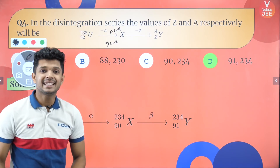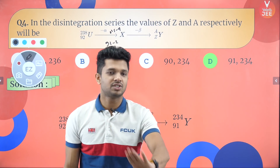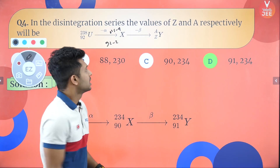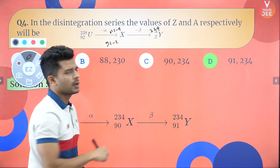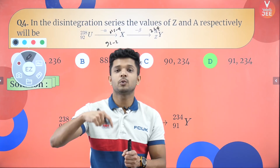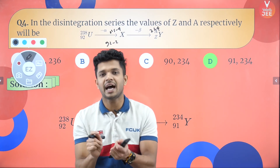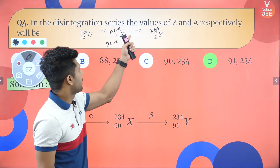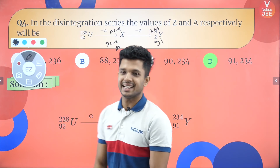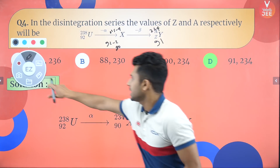Now from element X, beta-minus decay occurs. In beta-minus decay, the mass number never changes, so Y has mass number 234. For atomic number: in beta-minus decay, the atomic number increases by one (in beta-plus decay it decreases by one). So the atomic number goes from 90 to 91. The answer for element Y is atomic number 91, mass number 234 — option D.